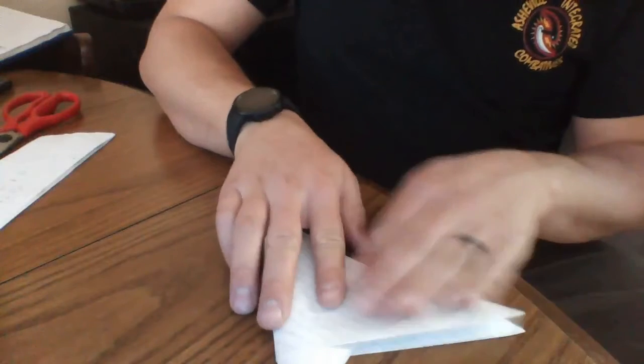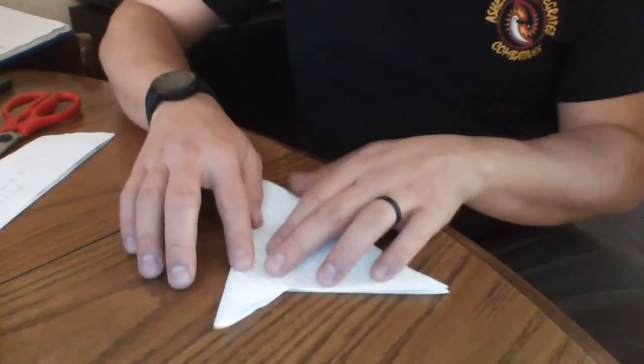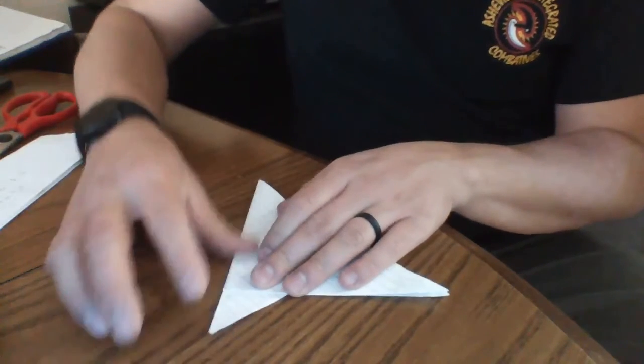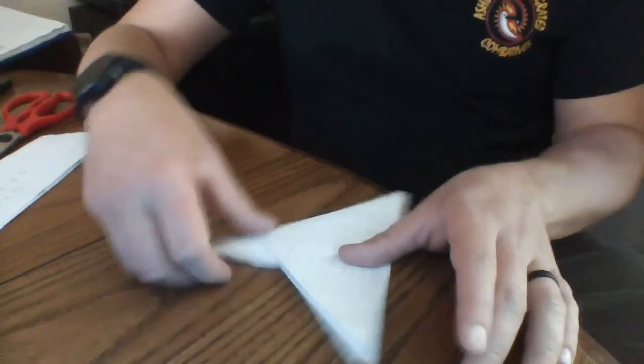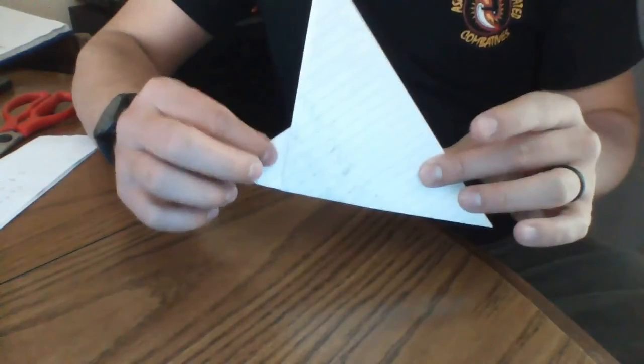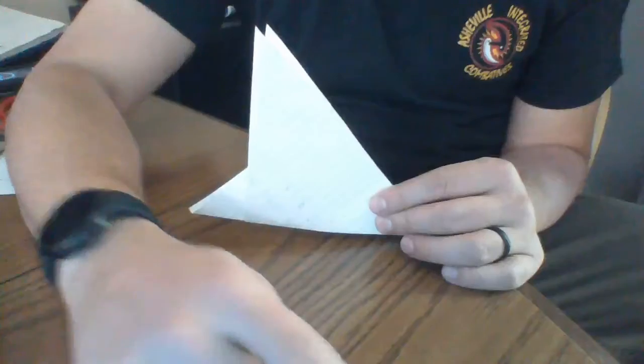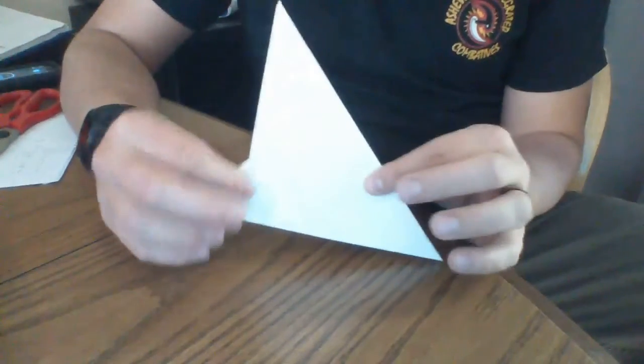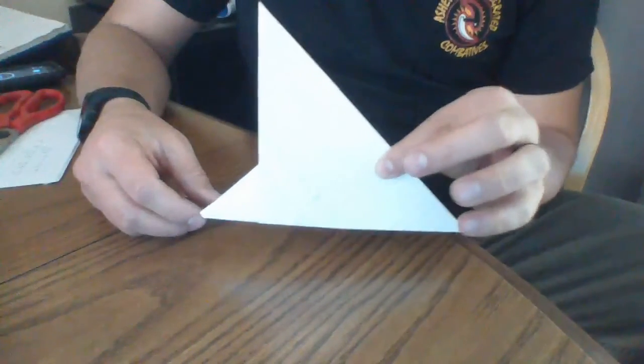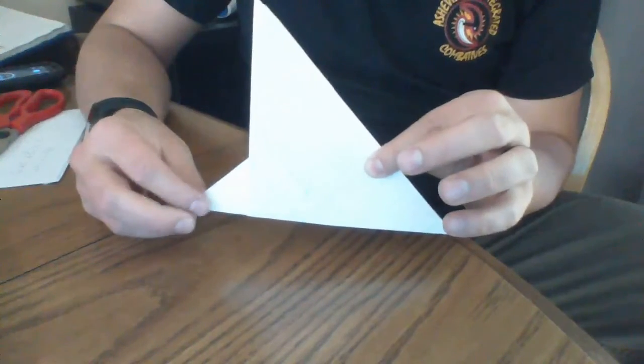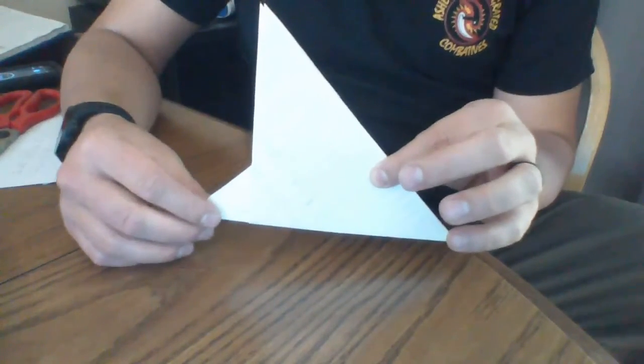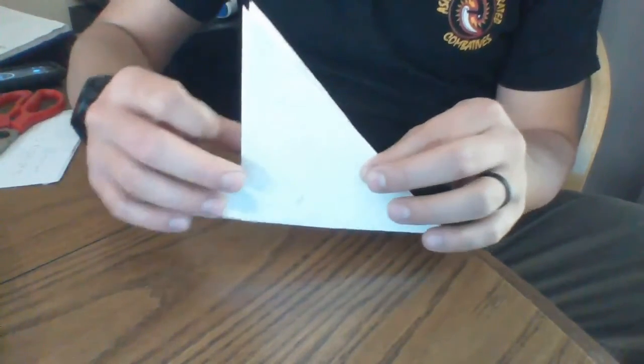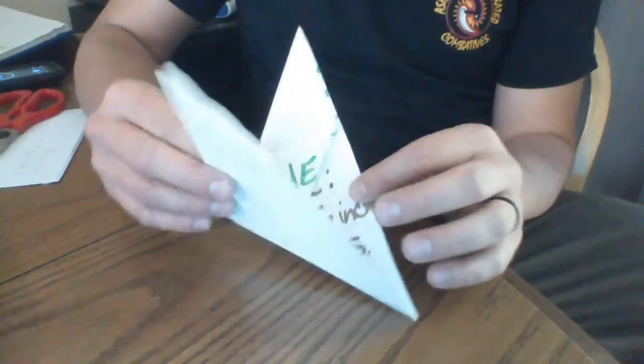Fold it over just like this and that's starting to give us the bird shape. All right, so now we've got this kind of vague weird triangle with a little tail coming out of it. So we're gonna start folding this so it looks more like the bird. First step is going to be take each one of these little wings.